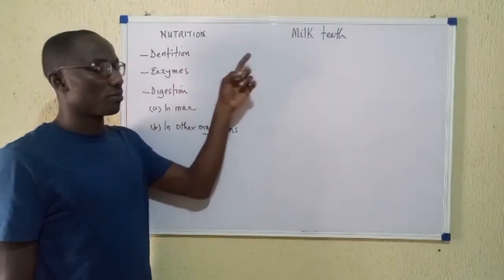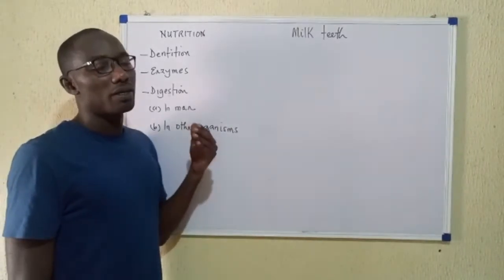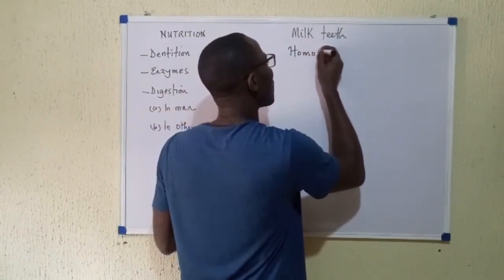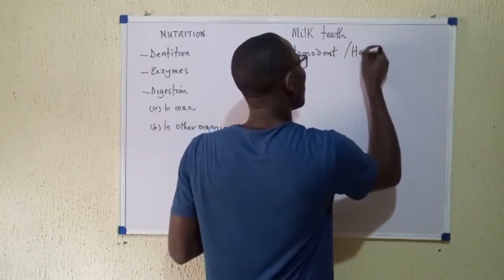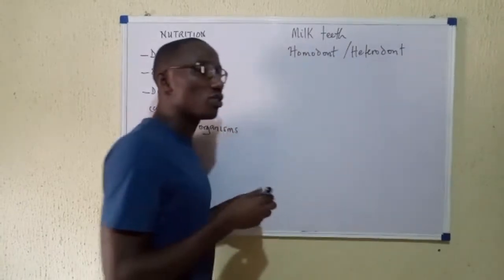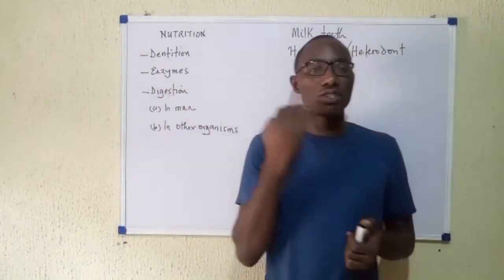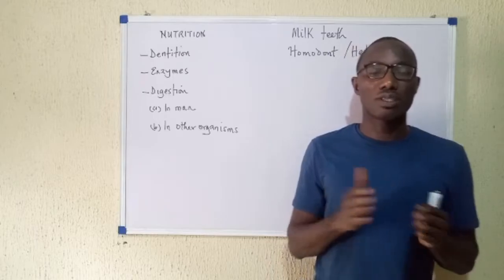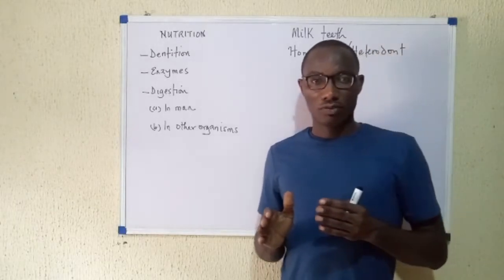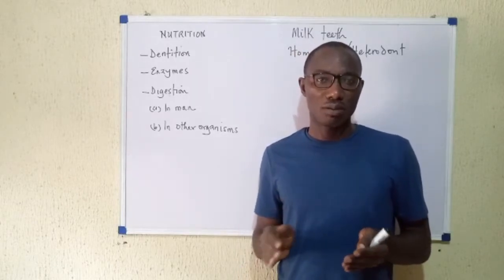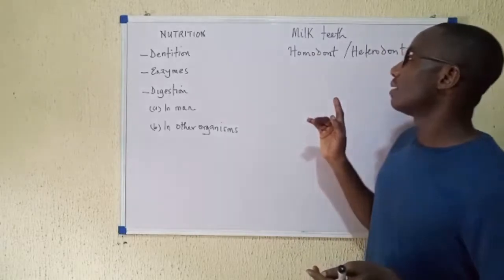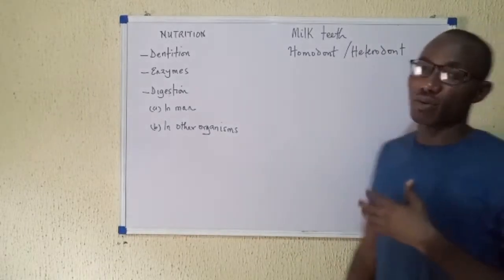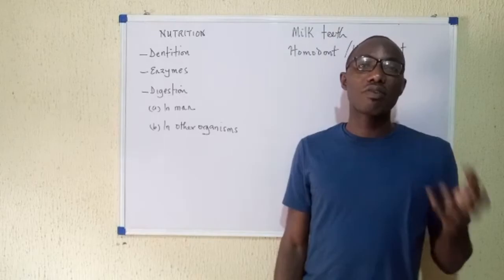Dentition may be described as homodont or heterodont. When dentition is homodont, all of the teeth in the organism's mouth are the same type — not necessarily the same size, but the same shape, with no specialization. For example, in fish all teeth are essentially the same. In man, however, our dentition is heterodont, meaning the different teeth in our mouth are of varied shapes and sizes.